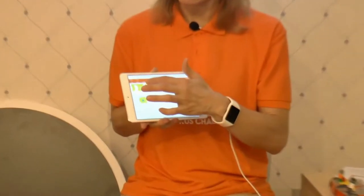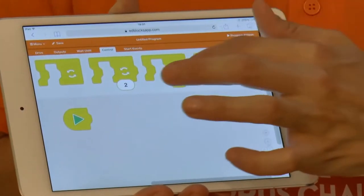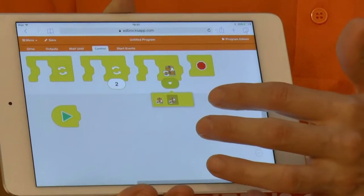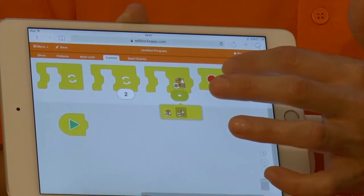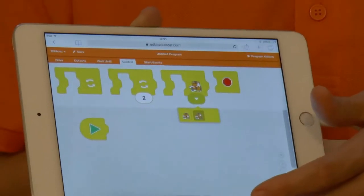In this video, we will go over all Edison's Control Blocks. Using Control Blocks, Edison can make an activity repeat itself indefinitely, repeat itself a certain number of times, or until a certain event happens. The program ending block is also located here.